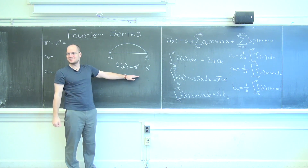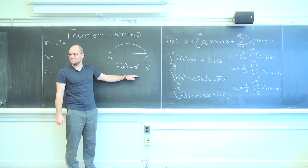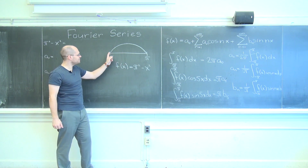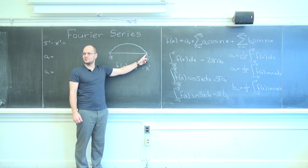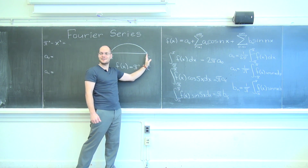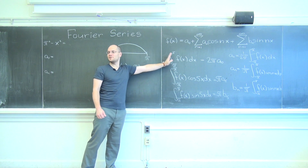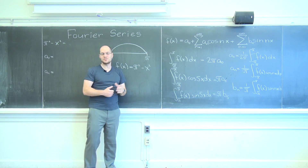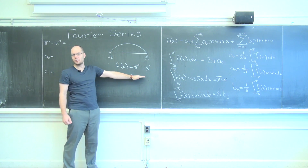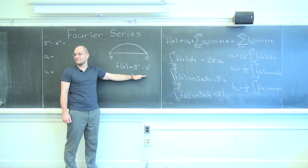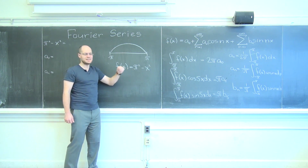Now let's consider this function, which I chose because its values at either end are zero. This function is periodic and continuous in the periodic continuation sense. So the interesting question is, how quickly will its coefficients decay? Let's find out.